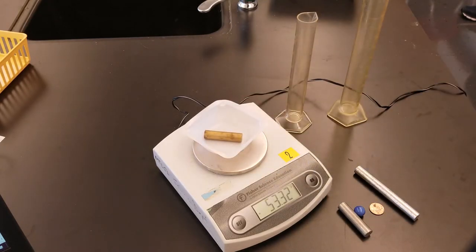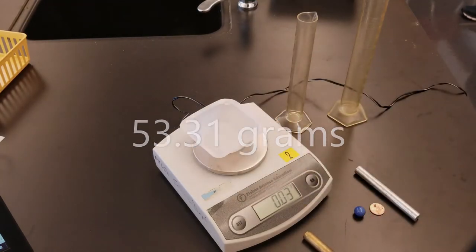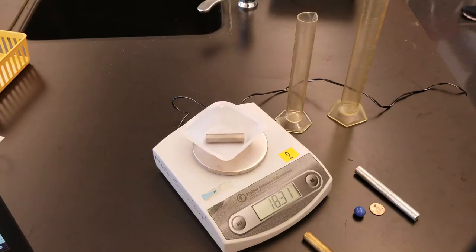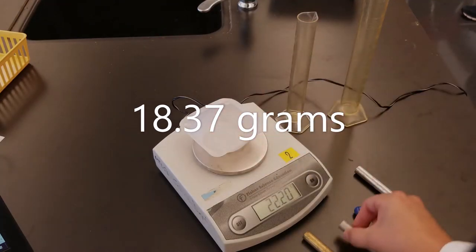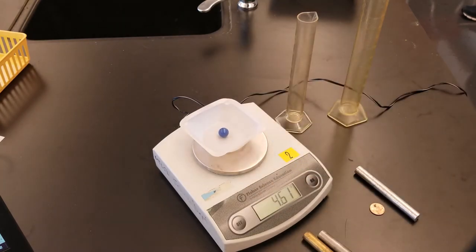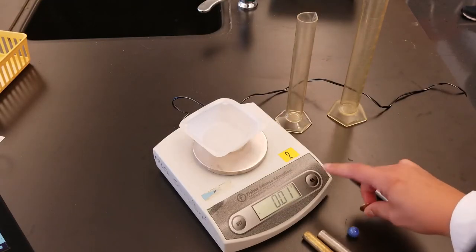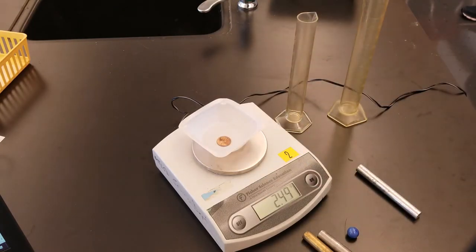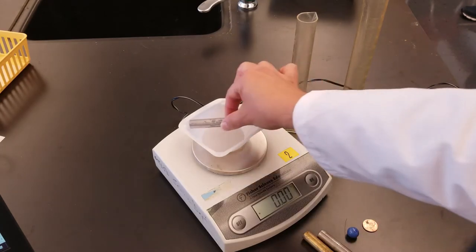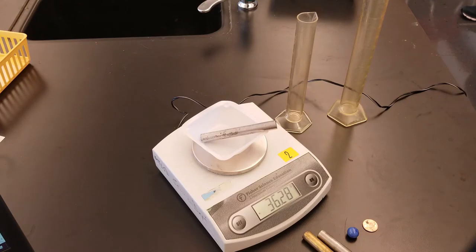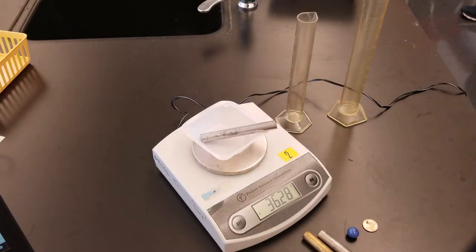Here is the mass of the gold colored five centimeter rod. Here is the mass of the silver colored five centimeter rod. The mass of the marble. Mass of the penny. And finally the mass of the ten centimeter silver colored rod. Double check that you have recorded all five of these values.